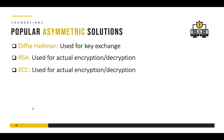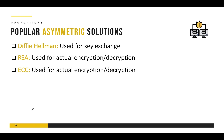Some popular asymmetric solutions include Diffie-Hellman, which is used for key exchange between two entities; RSA, which is used for actual encryption and decryption; and ECC, which is also used for encryption and decryption. There are several others available as well.